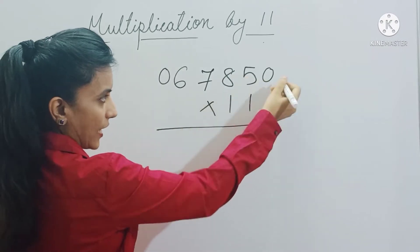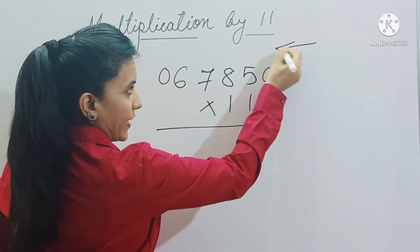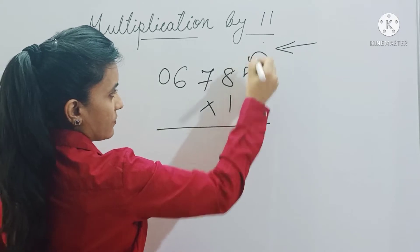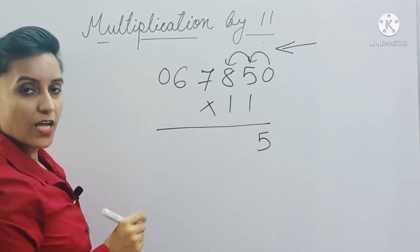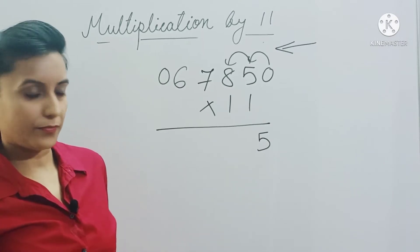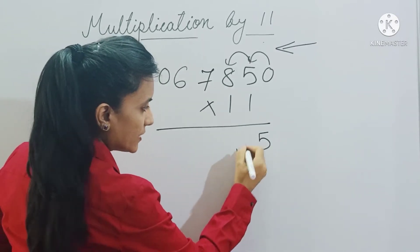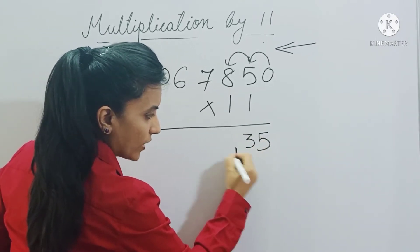And add these numbers starting from right to left in pairs. So 0 plus 5 is 5, 5 plus 8 is 13. Now 13 is a two-digit number, so you have to write 3 here like this. This 1 will be the carry forward.